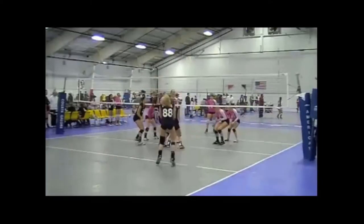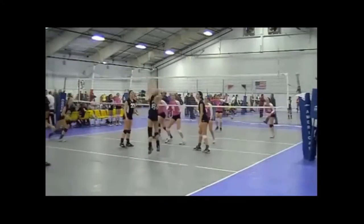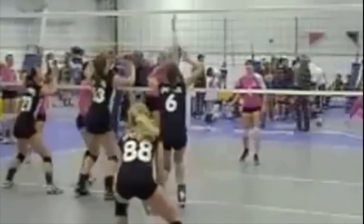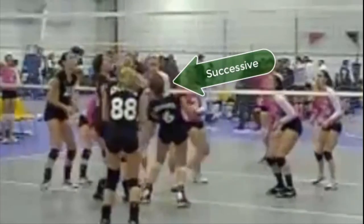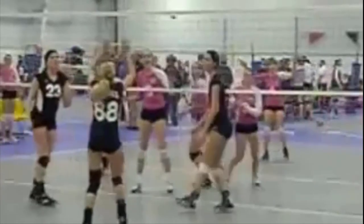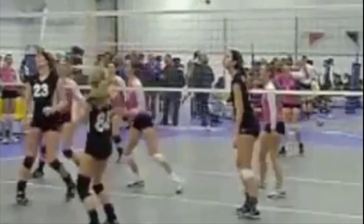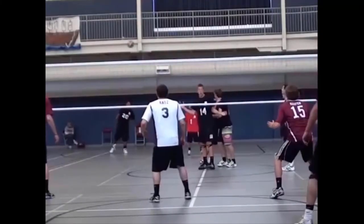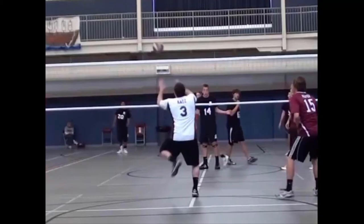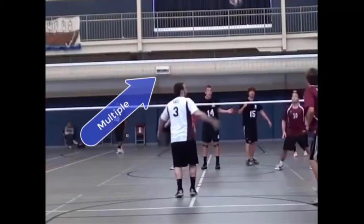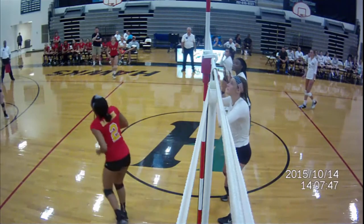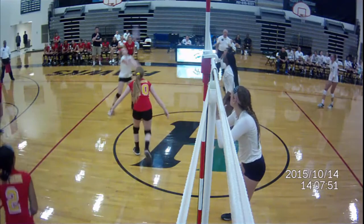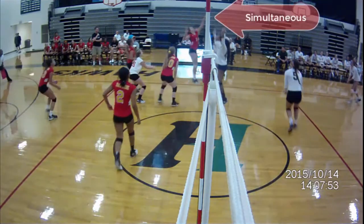Keep an eye on number 6 in black. After blocking, she plays the ball into the net and then pops it up in a second attempt — that's successive contact. This contact by number 3 is made in one attempt to play the ball: it contacts his left hand and then his right hand, so this is a multiple contact. There's a simultaneous contact hidden by the antenna, followed by a successive contact by number 2.